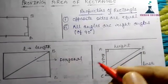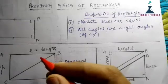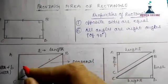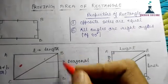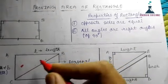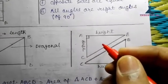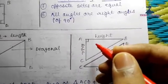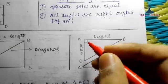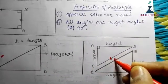Now, if you draw diagonal BC, it will divide the rectangle into two triangles — triangle ACB and triangle BDC — as you can see. I've separated them here for your convenience so that you can understand it easily.